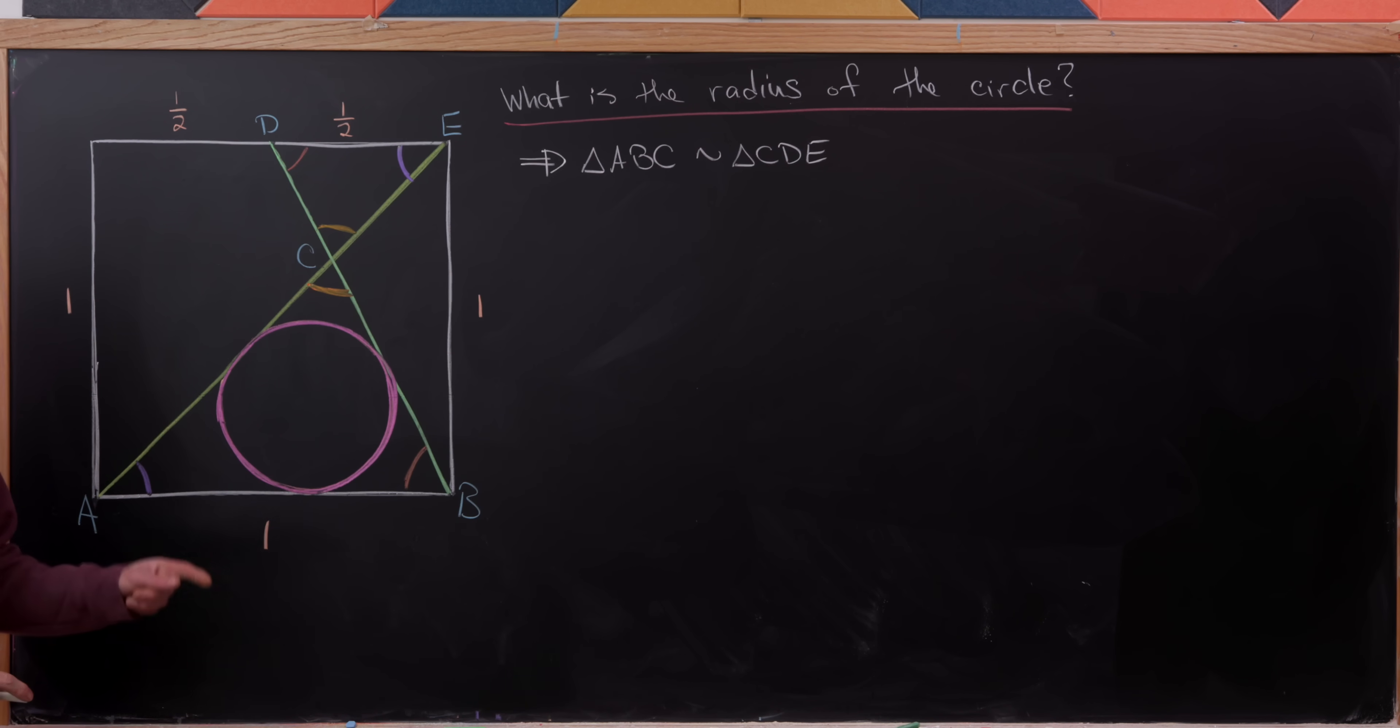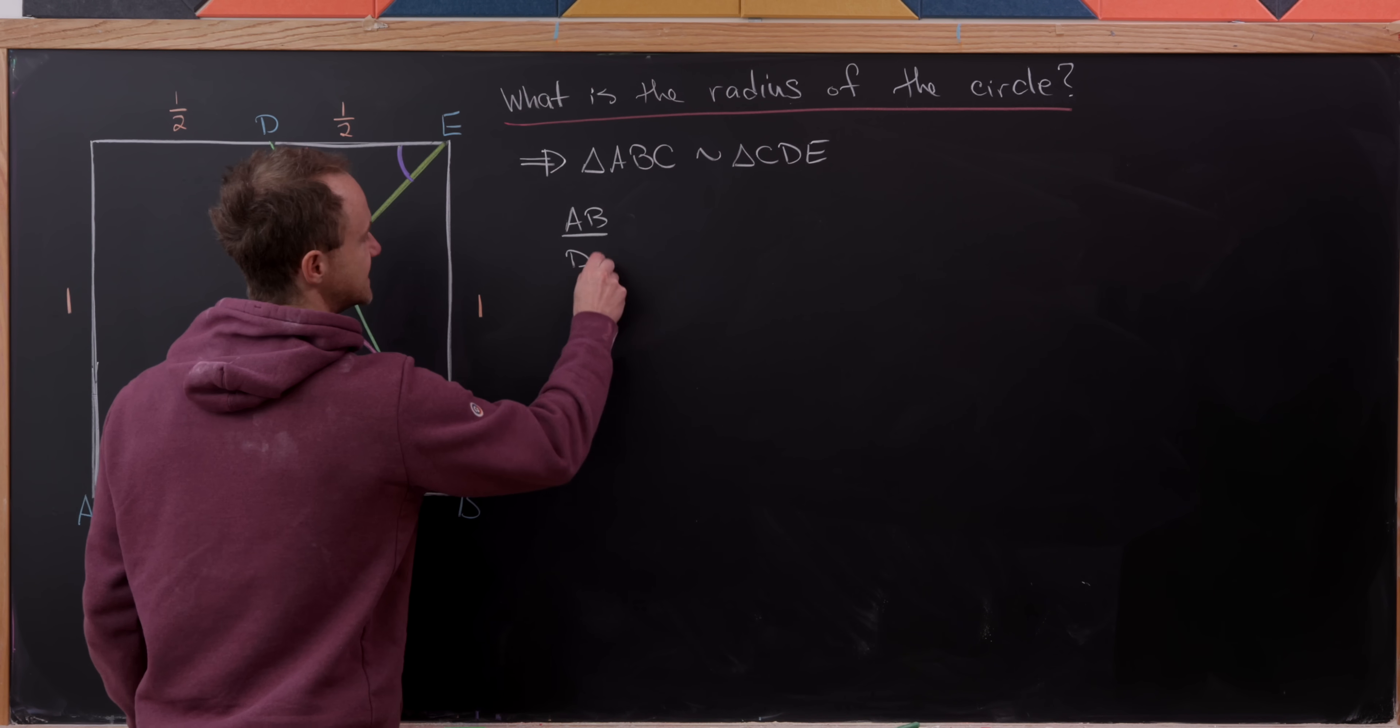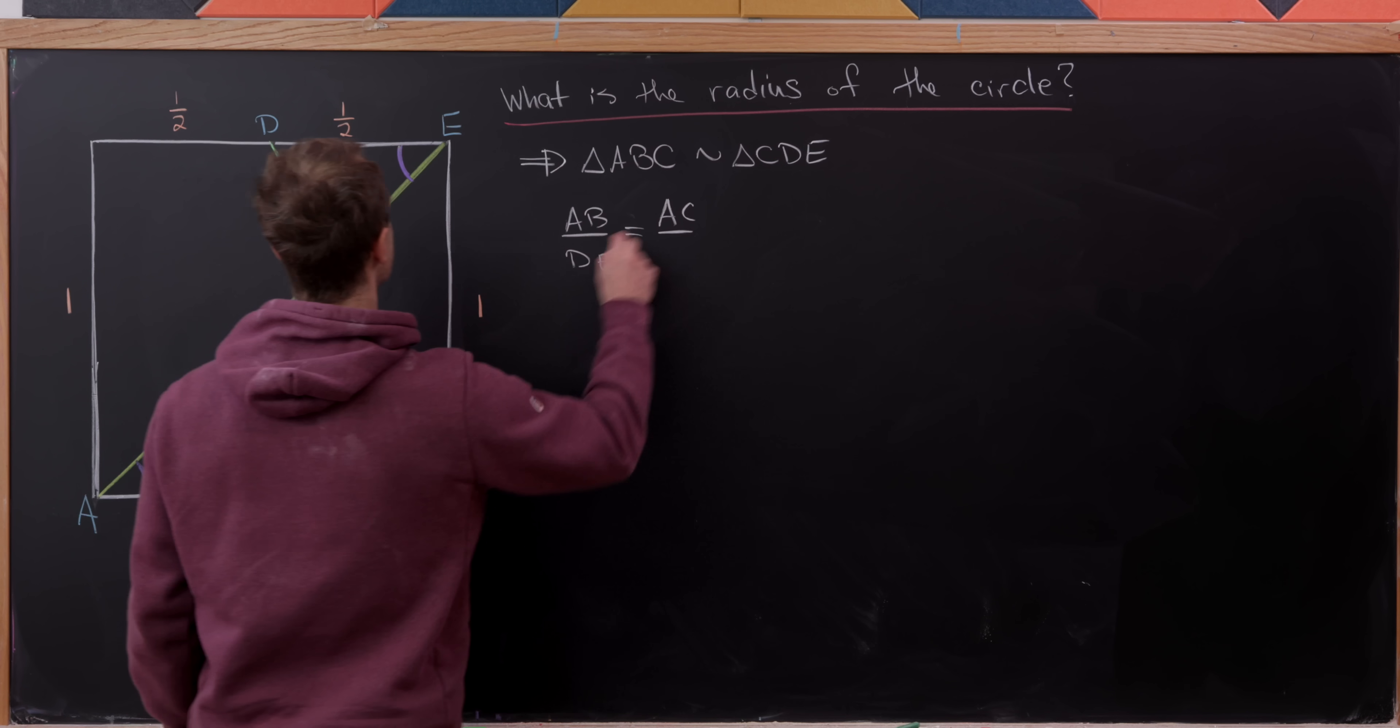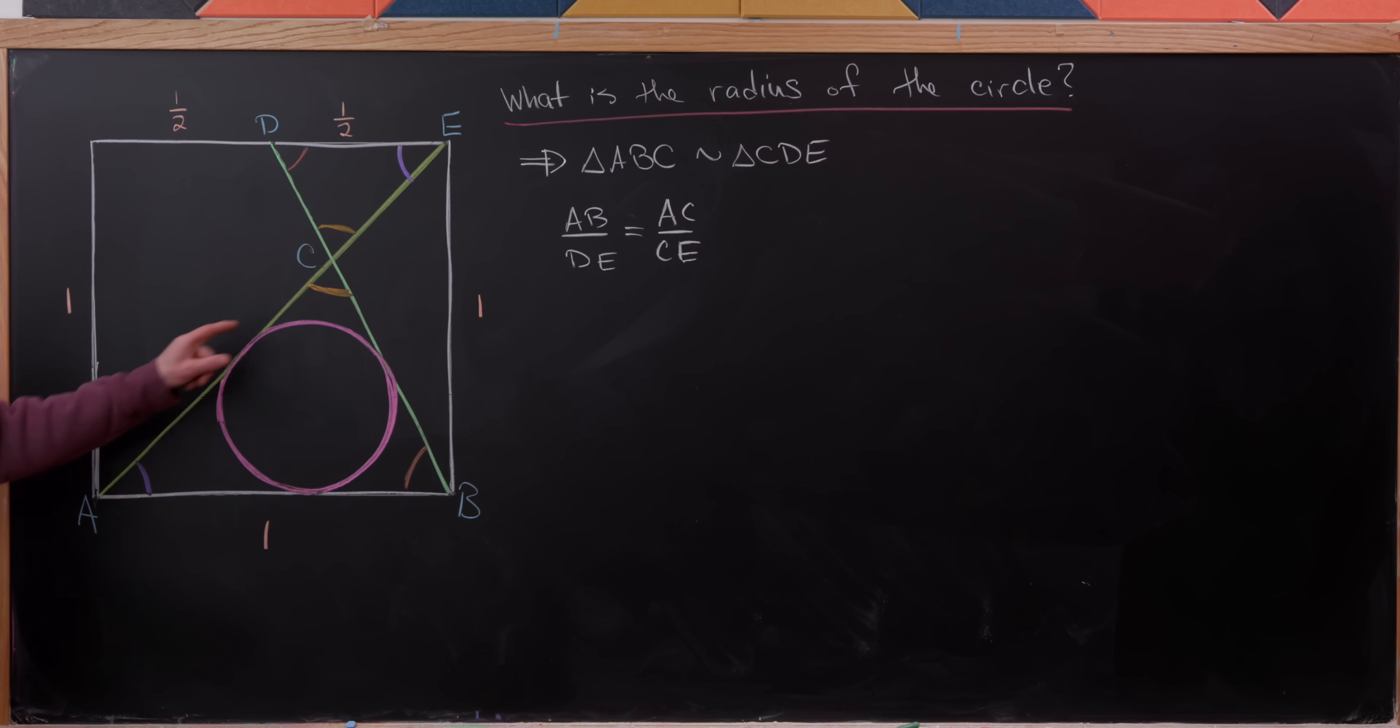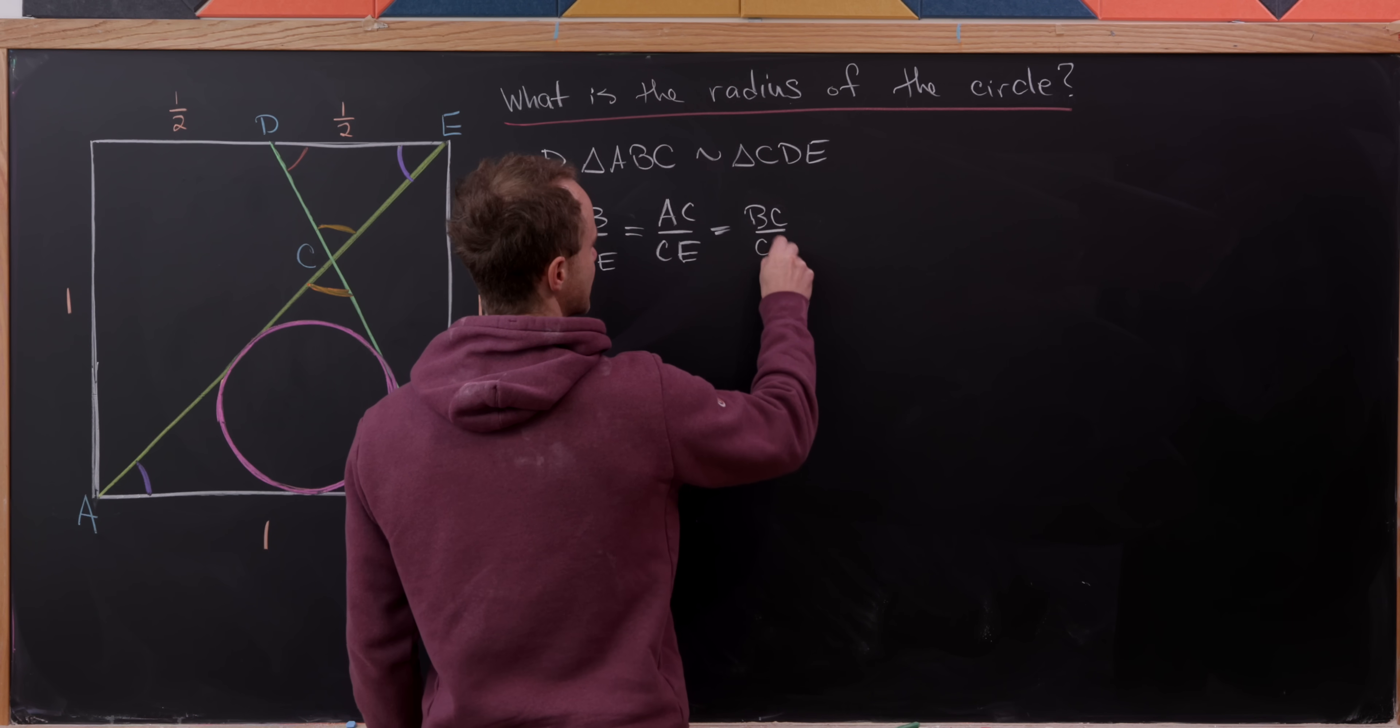But then from this, we know that similar triangles have their side lengths in proportion. So in particular, that means that the length of AB over the length of DE is the same as, let's get the angles right, the length of AC over the length of CE. And that's because we're looking at two sides that are opposite the orange angle and then the brown angle. But then doing the same thing with the sides that are opposite the purple angle, we will see that this is also equivalent to the ratio of length BC over length CD.